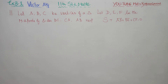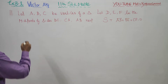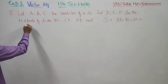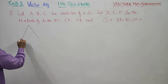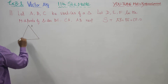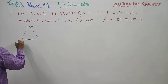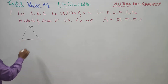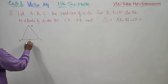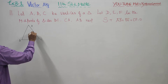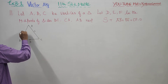Dear 11th standard students, in exercise number 8.1, sum number 11, let ABC be the vertices of the triangle. DEF are the midpoints of BC, CA, and AB respectively — D is the midpoint of BC, E is the midpoint of CA, and F is the midpoint of AB.